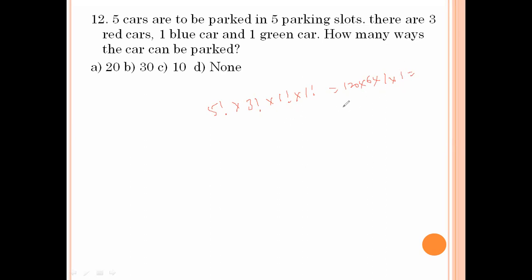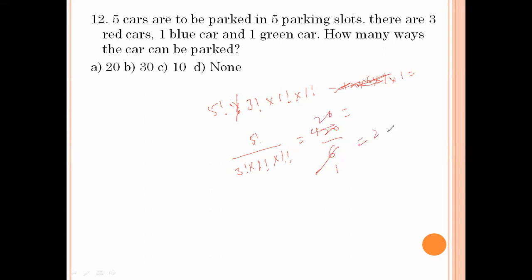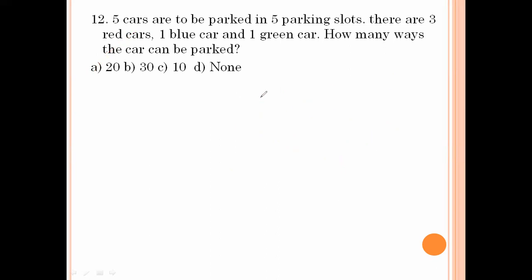The 5 cars are arranged in 5 factorial ways, divided by 3 factorial for the repeated red cars, times 1 factorial for blue and 1 factorial for green. So 5 factorial divided by 3 factorial equals 120 divided by 6, which equals 20. Option number A is the right answer.